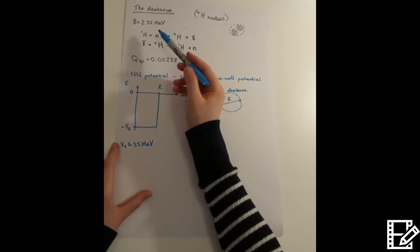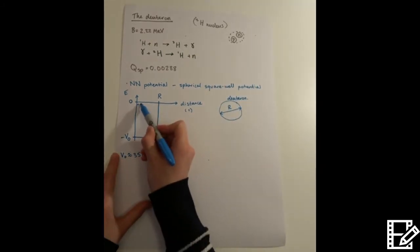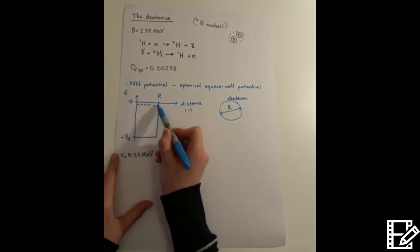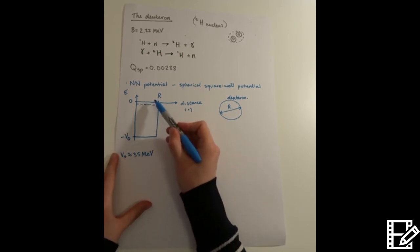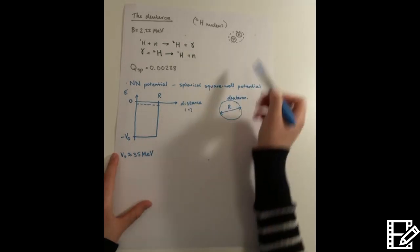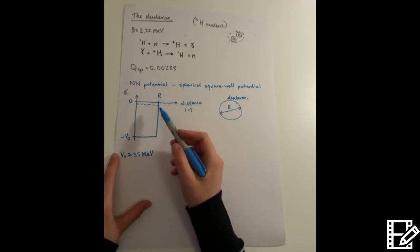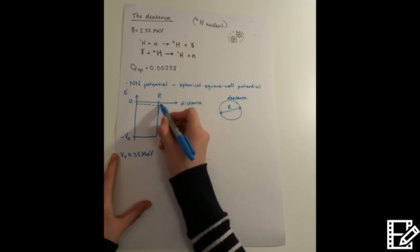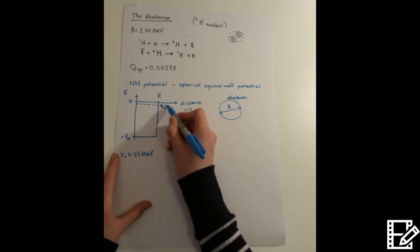So we determined the binding energy of the deuteron, and it turns out that that's lying about here, which is very close to the system actually being unbound. So that's sort of justifying why the system is so weakly bound, because here it's very close to being just two separate nucleons. So this is the binding energy of the deuteron.